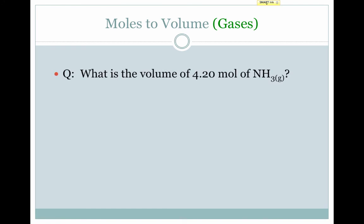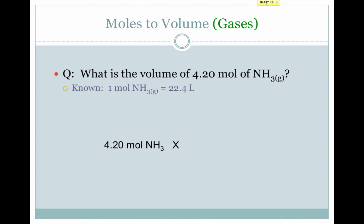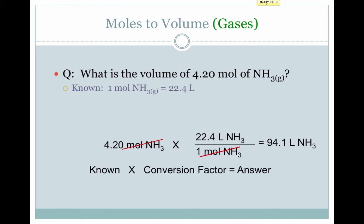So we can use this in our calculations. If we want to know the volume of 4.2 moles of ammonia gas, NH3, we know that one mole of NH3 gas is 22.4 liters. This could have been any gas at STP — it will always be 22.4 liters. So we write our given, multiply by a conversion factor, and we find that 4.2 moles of ammonia has a volume of 94.1 liters.